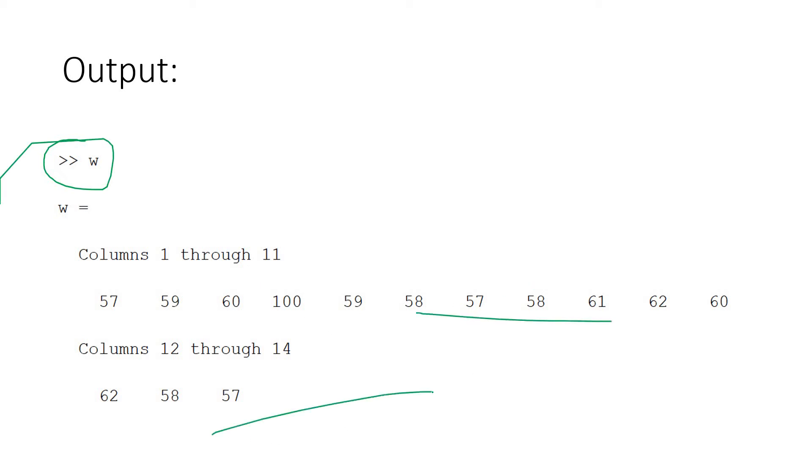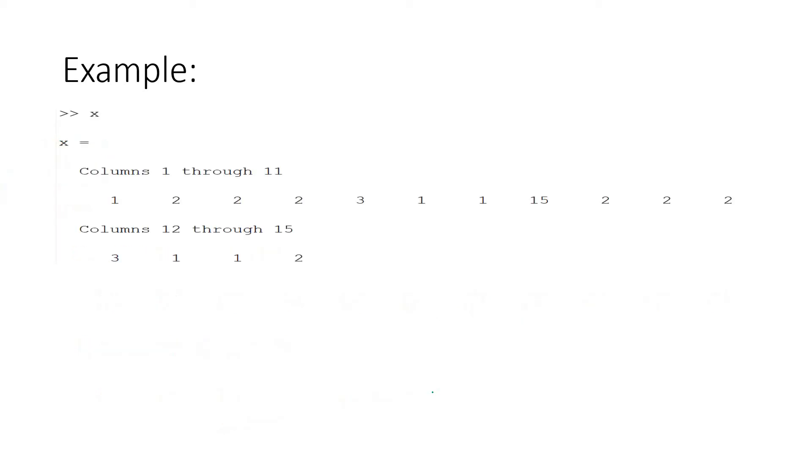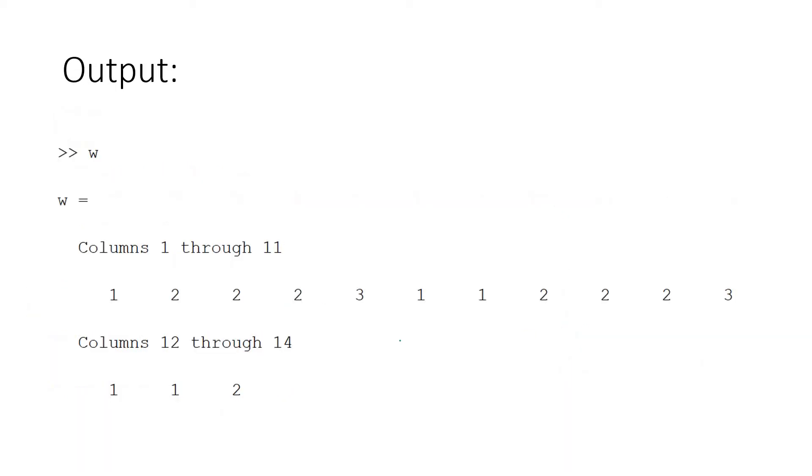If you run w, which is storing basically our output, you will be getting the data apart from 300. This is one possible way to remove outliers. Another example: suppose my input is 1, 2, 2, 2, 3, 1, 1, 15, 2, 2, 2, 3, 1, 1, 2. It is quite clear that this may possibly be one outlier. We'll be applying the same code and we'll be getting k value as one here, which is denoting this particular 15. If we check output, our output w will be having all the elements apart from the value 15.